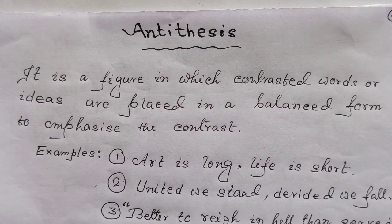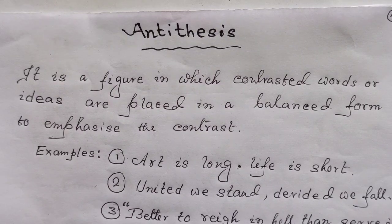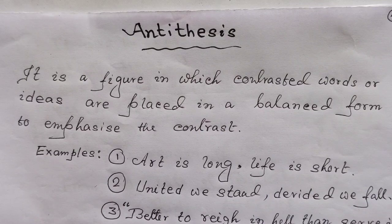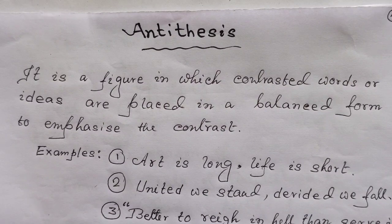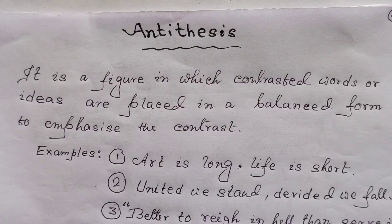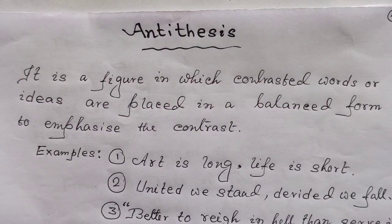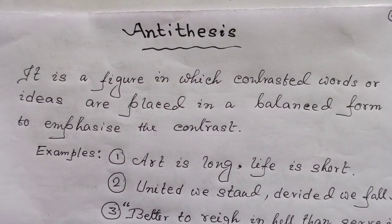The first one is antithesis. It is a figure in which contrasted ideas or words are placed in a balanced form to emphasize the contrast. Two contrasted words or ideas are placed in the form of a balance, just to emphasize the contrast. Example one: Art is long. Life is short. There are two clauses, grammatically the same, and two ideas are juxtaposed in the form of a balance to emphasize the contrast.